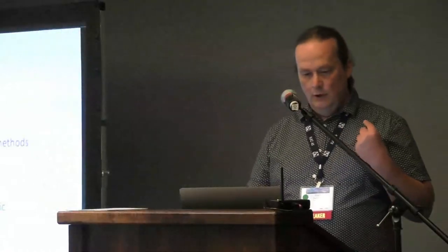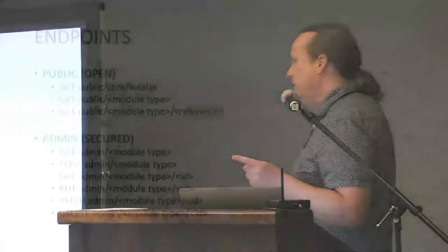In terms of endpoints, every service has two types. There's the public API — all GET requests, never modifying data — and then there's a secured admin API which is a typical CRUD interface. There is a special endpoint for getting the list of locales at 'public/core/locales.' For each module there's 'public/{module-name},' and if you're getting a specific element in that module you add a reference. So 'public/numbers/Latn' gets all number systems called Latin for whatever locales you specify.